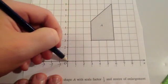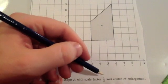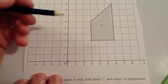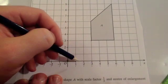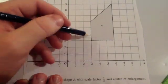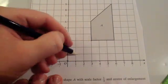So to get from our center of enlargement to here, we'd go 3 across and 3 up. Because the scale factor of enlargement is a third, we're going to divide those distances by 3. So 3 across divided by 3 would be 1 across, and instead of going 3 up we'd divide that by 3 and we'll go 1 up. So this point will move to here.